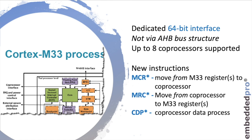To access external coprocessors, there are new ARM instructions in the ARM V8M architecture: MCR, MRC, and CDP. MCR moves data from an M33 register to the coprocessor. MRC moves data from the coprocessor registers to an M33 register. And CDP is a coprocessor data processing instruction. Let's look in a little more detail.